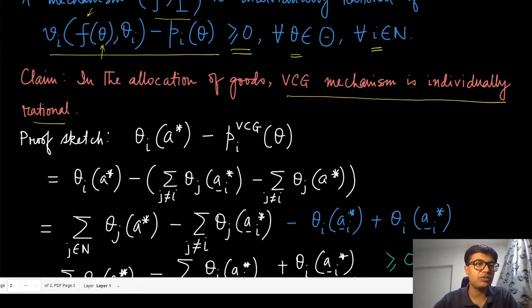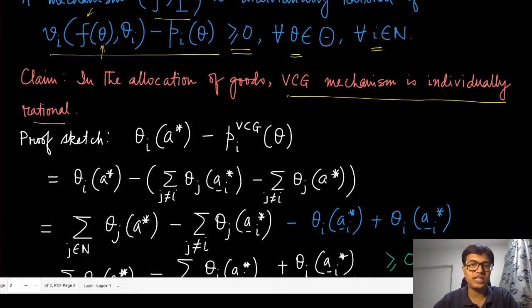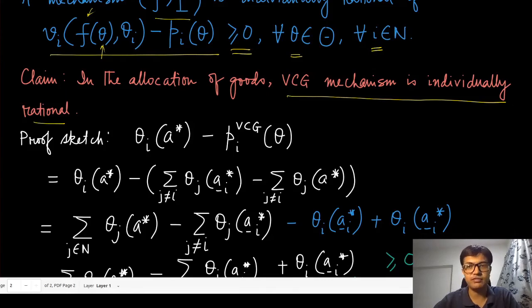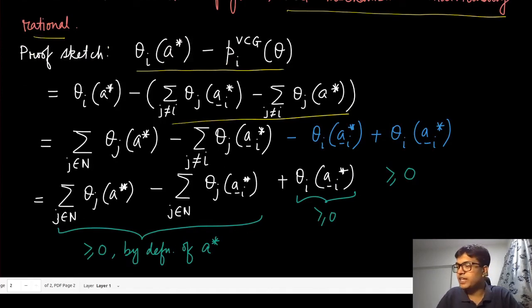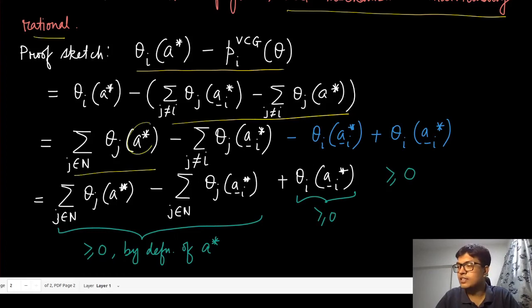You may find an analogous result in textbooks discussing choice set monotonicity and the condition that there are no negative externalities — the latter is ensured by focusing only on goods. The VCG mechanism satisfies individual rationality under those general conditions, but for simplicity we focus on this specific setting that satisfies both properties. What we must prove is that the utility for every agent is non-negative.